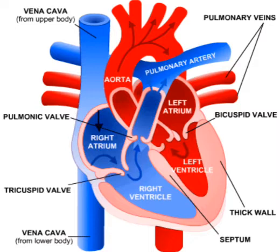The upper chamber is called the atrium, which is divided into the right atrium and left atrium. The lower chamber is called the ventricle, divided into the right ventricle and left ventricle. The wall of the right atrium is basically thin, whereas the wall of the ventricle is thick. The right and left chambers of the heart are separated by a septum — a partition that divides the two sides of the heart.